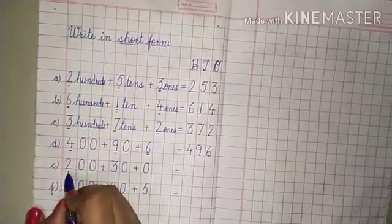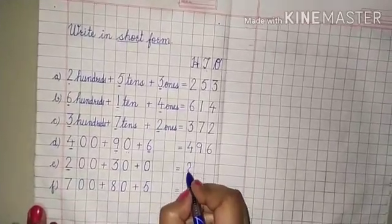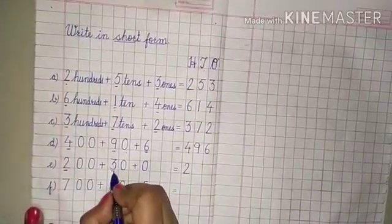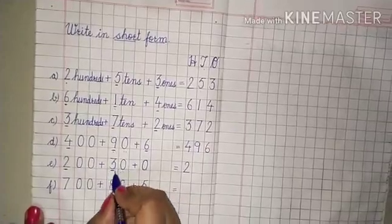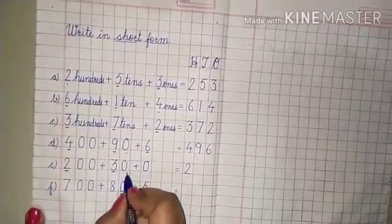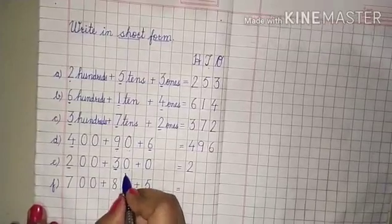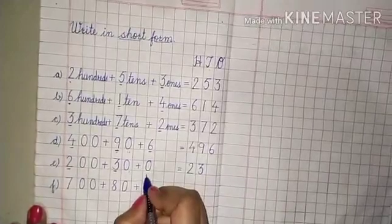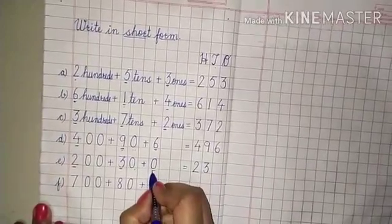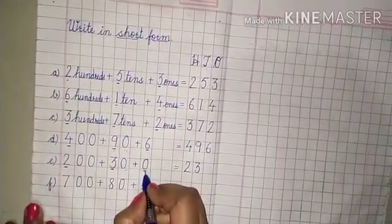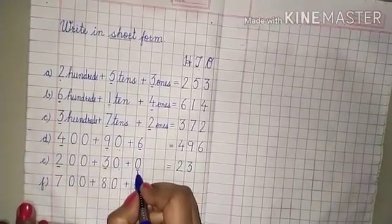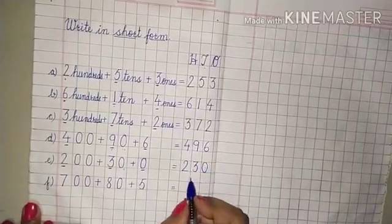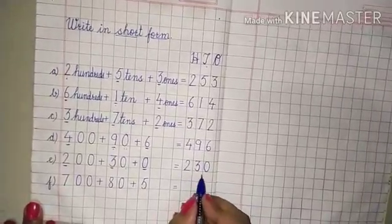Now the next: two hundred — two will come here under the heading of H. Thirty — three zero — means three tens, so three will come here. See here, zero is given — it means zero is for the ones place, so we will write zero here. Read the number: two hundred thirty.